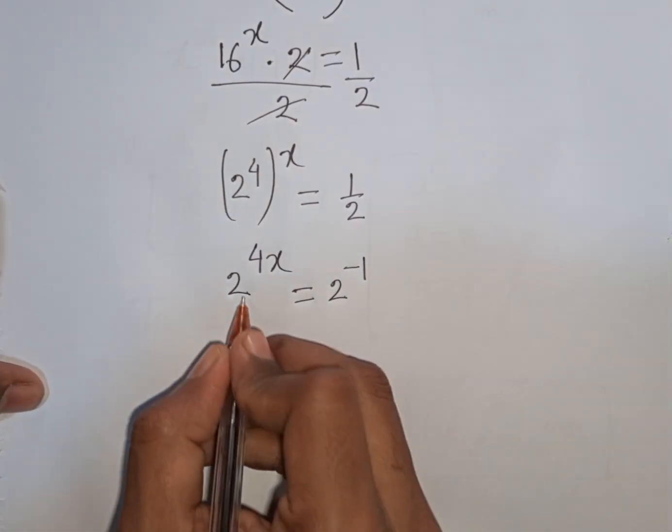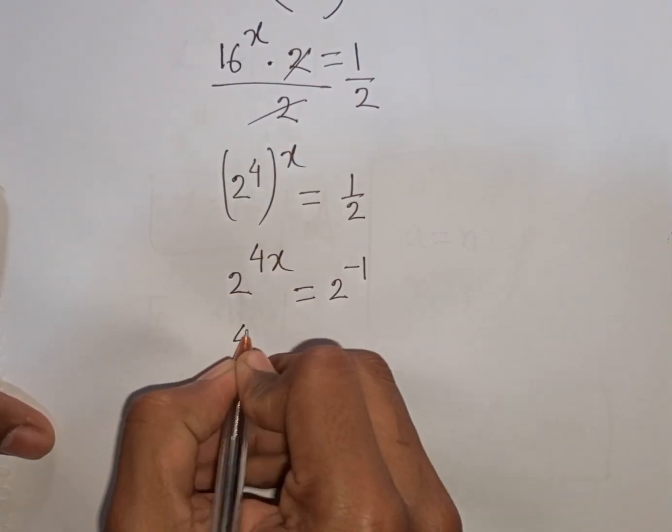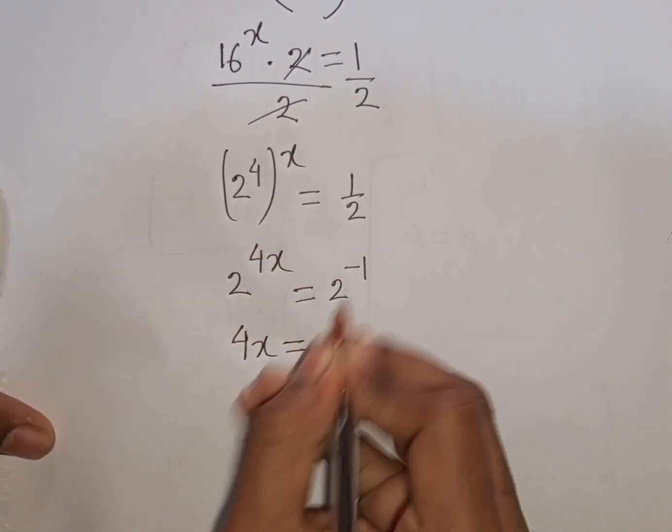Now we see the same base 2 on both sides. The bases cancel, so the powers are equal, meaning 4x equals -1.